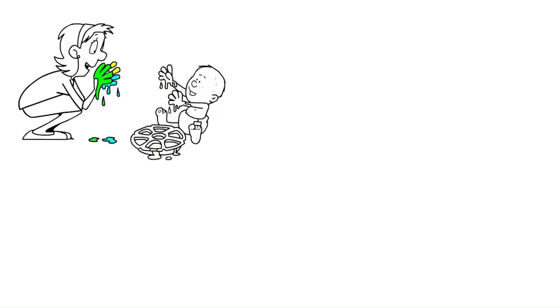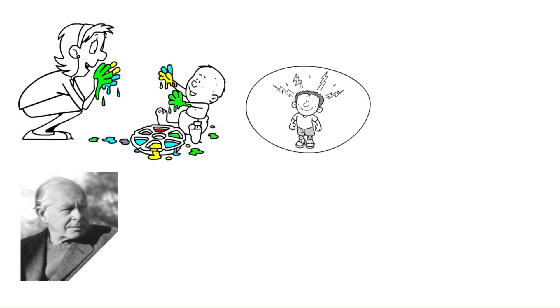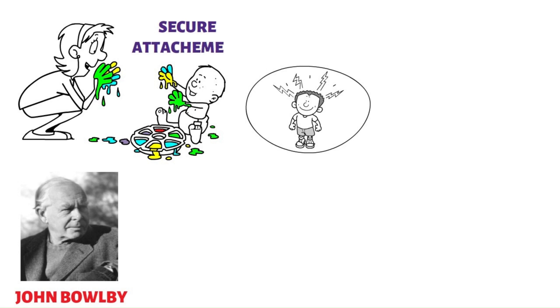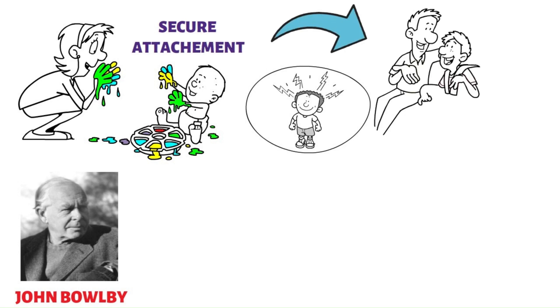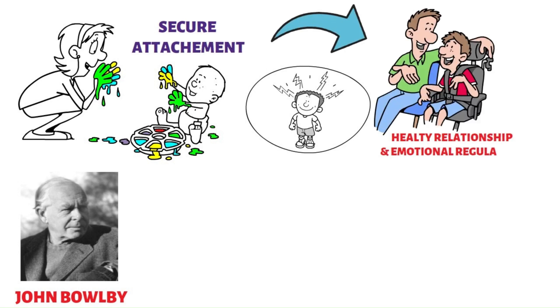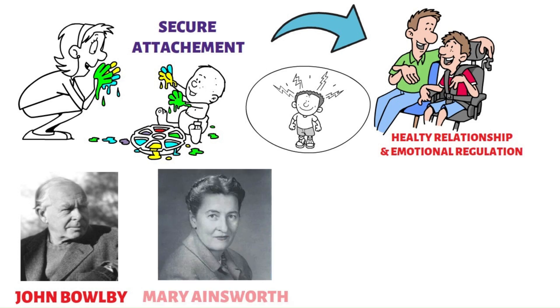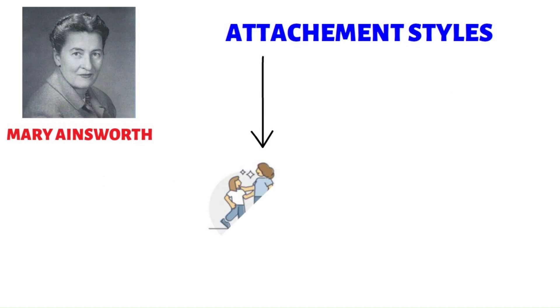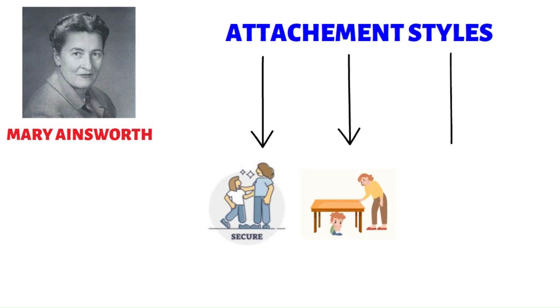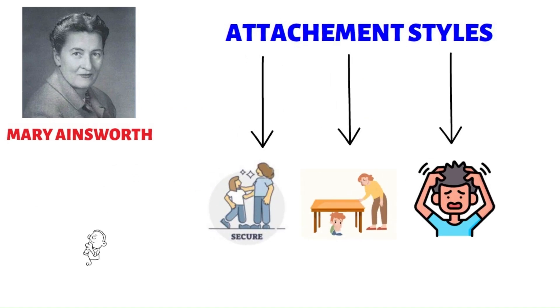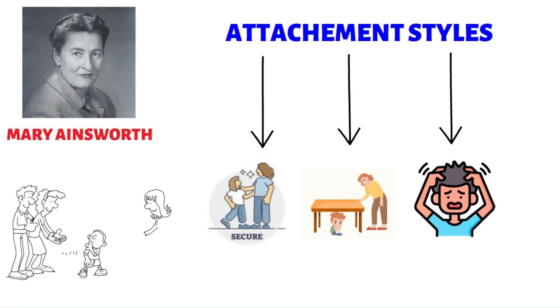Attachment Theory examines the bonds formed between infants and their caregivers and their impact on later development. John Bowlby emphasized the importance of secure attachment in providing a foundation for healthy relationships and emotional regulation. Mary Ainsworth further categorized attachment styles — such as secure, anxious-avoidant, and anxious-ambivalent — based on infants' responses to separation and reunion with their caregivers.